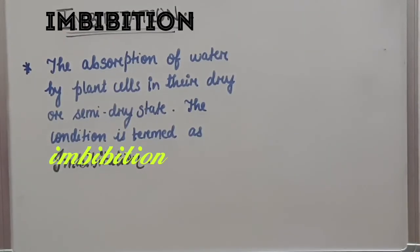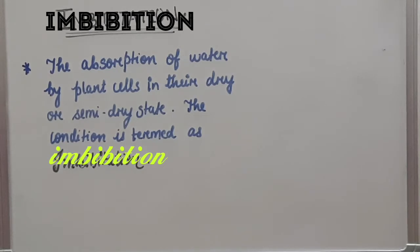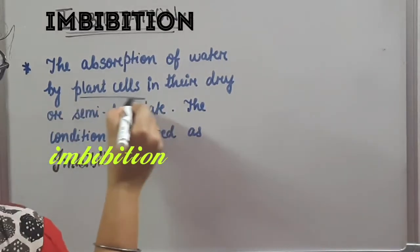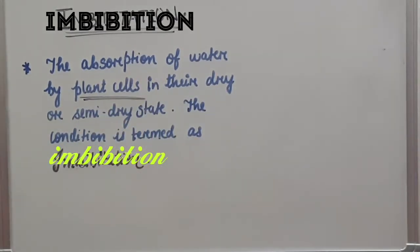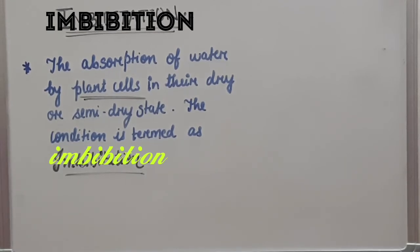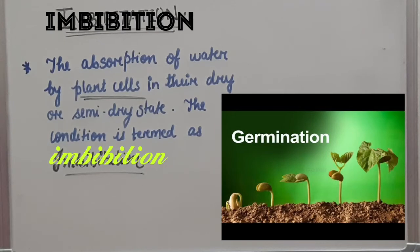The next term to be discussed is imbibition. For example, wooden doors and windows usually stick to their frames during the rainy season. This happens because of absorption of water by plant cells in their dry or semi-dry state. This condition is termed imbibition. Seed germination is another example of imbibition.